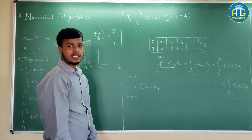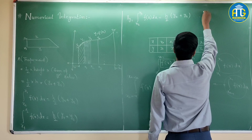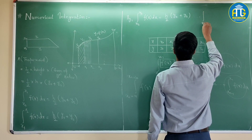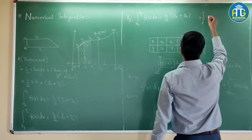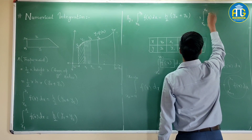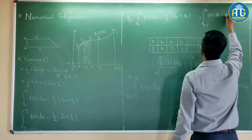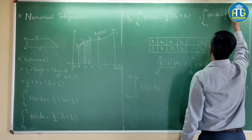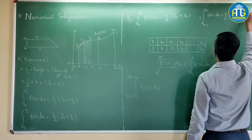And so on. If you go on finding these values, at last the integral from xn-1 to xn of f(x) dx will equal h/2 times (yn-1 + yn).